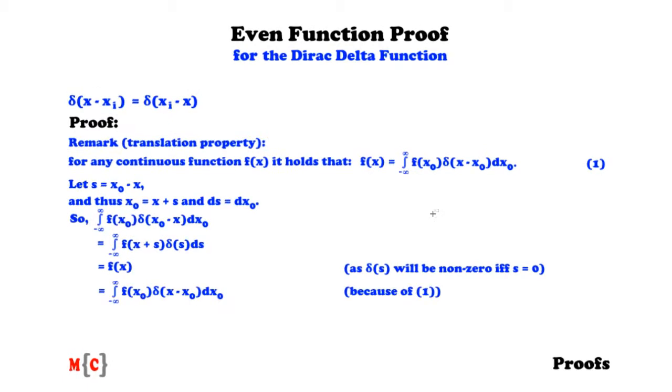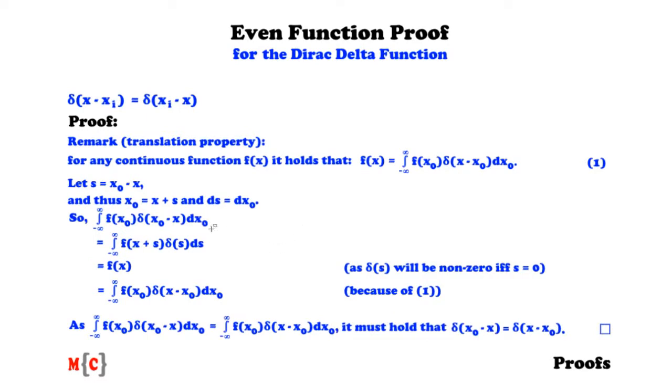Now if we apply formula one again, so the translation property, from this we know that f(x) is equal to the integral from minus infinity to infinity over f(x_0)δ(x - x_0)dx_0. And thus we know that the integral from minus infinity to infinity over f(x_0)δ(x_0 - x)dx_0 is equal to the integral from minus infinity to infinity over f(x_0)δ(x - x_0)dx_0.